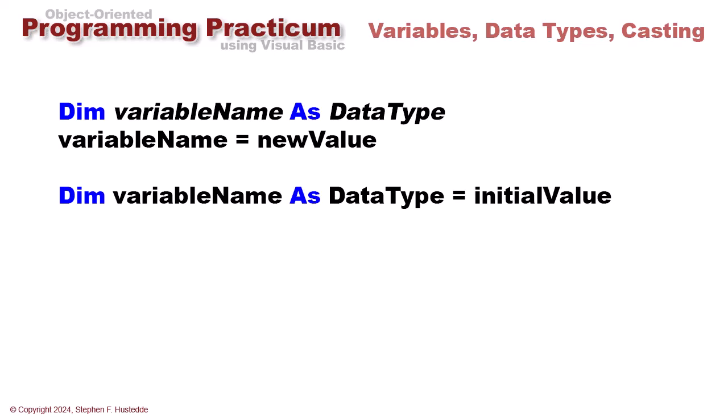In programming we work with variables, and variables are simply containers that have some data. In VB we create those containers or variables with the keyword dim, which stands for dimension. We're going to dim the variable name as a particular data type and then we can assign a value to that variable name once we've declared it. That dim statement is called the declaration statement.